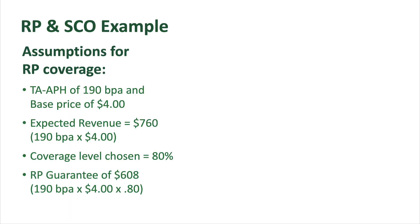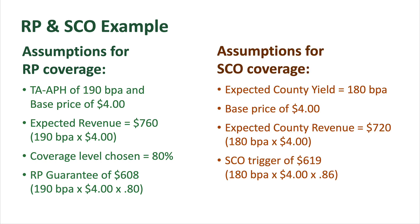Let's dive into an example. Let's take a look at a farm with a trend-adjusted APH of 190 bushels per acre. We'll use last year's February 2019 price — the corn average during the month of February was $4. That yield times price is $760 of expected farm revenue on the RP policy. Let's say they choose 80% coverage in RP, which gives them a guarantee of $608.